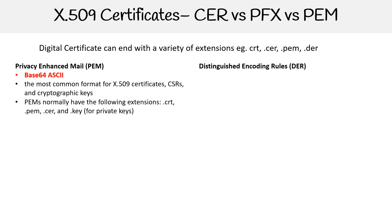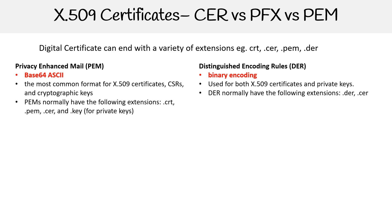Then you have DER — Distinguished Encoding Rules. This is a binary encoding, so if you open up the file, it's a bunch of binary code and you won't be able to make sense of it or edit it. It's used for both X.509 certificates and private keys. DER files normally have the extensions .der or .crt.